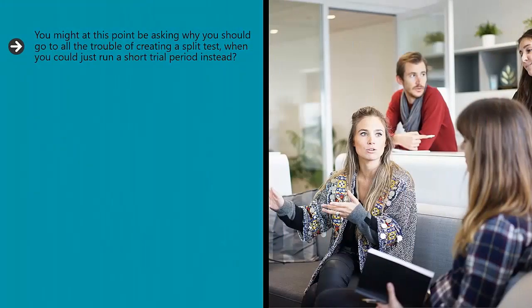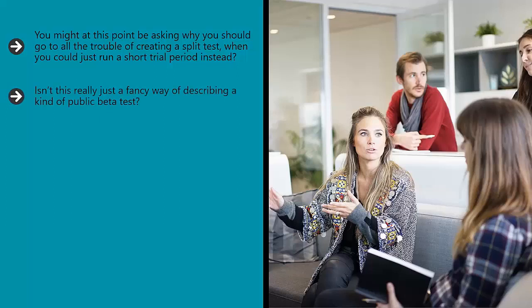Why split testing works and when it doesn't — understanding statistical significance. You might at this point be asking why you should go to all the trouble of creating a split test when you could just run a short trial period instead. Why color three prawn shops red and then wait for them to collect enough actionable data? Isn't this really just a fancy way of describing a kind of public beta test? Well, there are a few key differences to keep in mind, which involve thinking like an actual scientist — because that's what this is emulating.